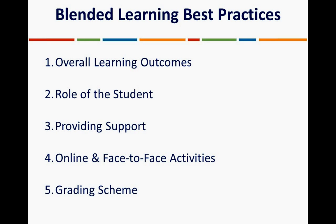Blended learning has five best practices: overall learning outcomes, role of the student, providing support, online and face-to-face activities, and a grading scheme. The first — overall learning outcomes — is especially important in blended learning courses. It's about what you want to see the student accomplish — weekly, monthly, quarterly, yearly, daily — however you want to set it up. You're setting these learning outcomes for the students and telling them what their success looks like.